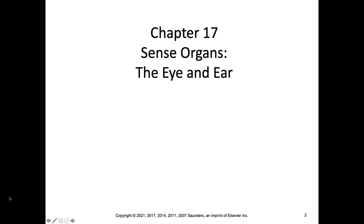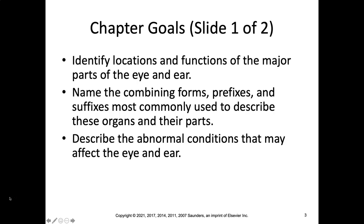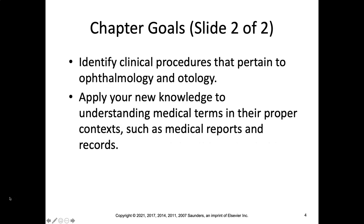We will also be covering these chapter goals: looking at the locations and functions of the major parts of the eye and the ear, going through the combining forms, prefixes, and suffixes most commonly used to describe these organs and their parts, describing the abnormal conditions that may affect the eye and the ear, talking about clinical procedures that pertain to ophthalmology and otology, and then applying our knowledge to understanding medical terms in their proper contexts.